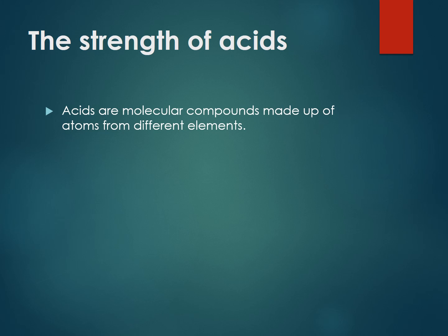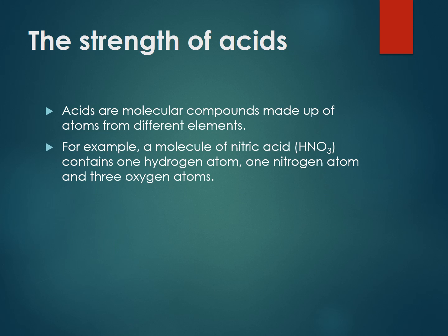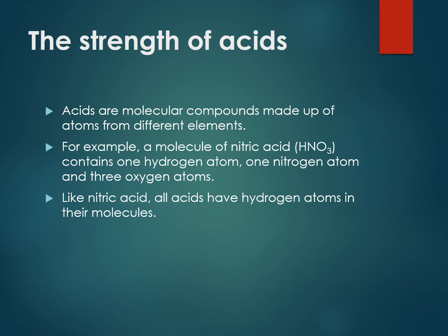The strength of acids: an acid is a substance made up of a number of atoms — different atoms, could be two, could be a whole stack of them. For example, a molecule of nitric acid contains a hydrogen atom, a nitrogen atom, and three oxygen atoms, all bonded together. Nitric acid has hydrogen atoms in its molecules and can give out hydrogen ions.